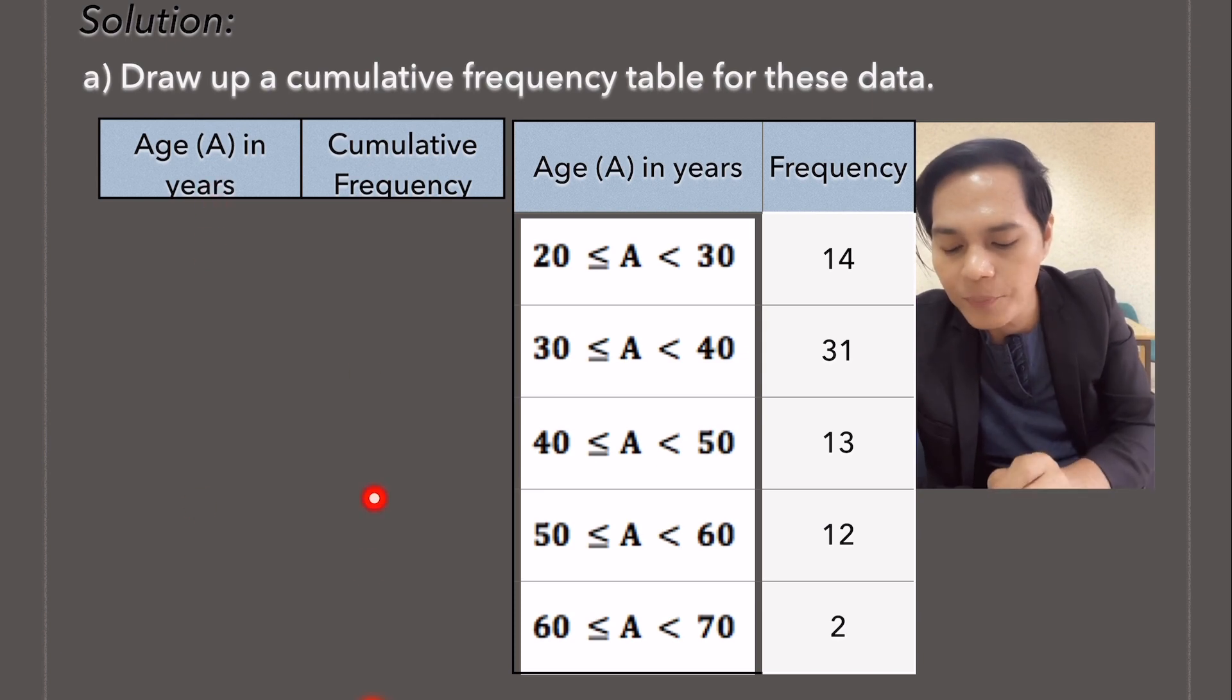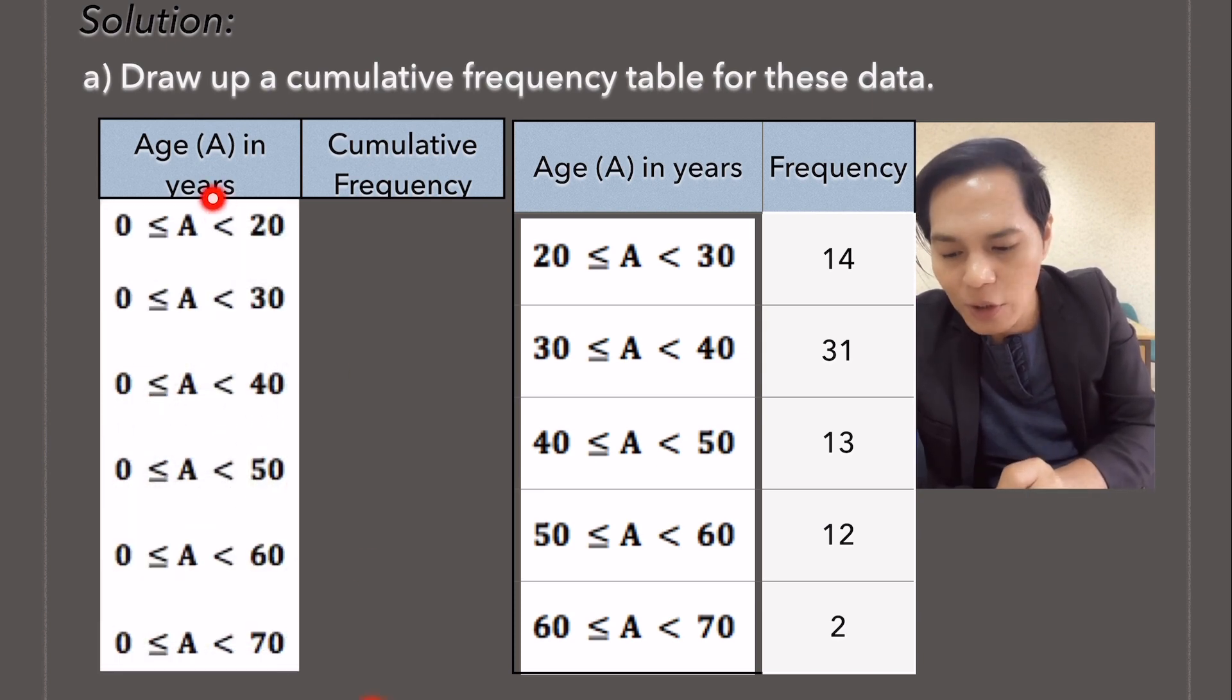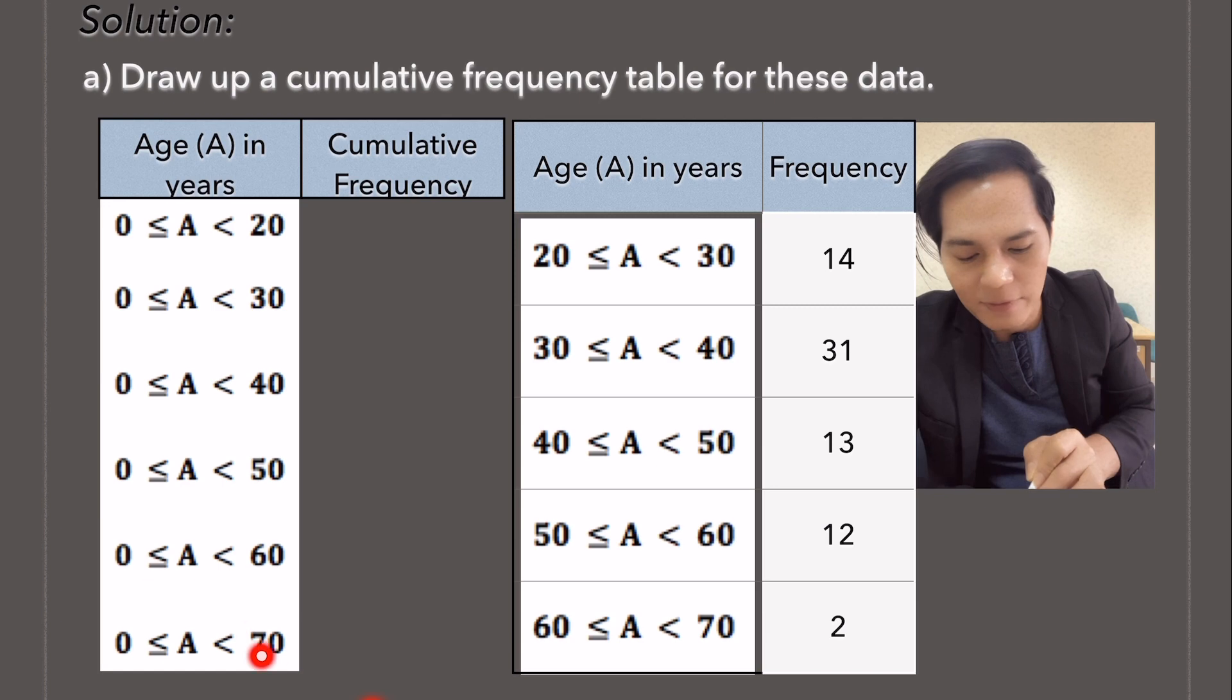And look at this now, age in years. Look at how I presented it, 0 to 20, okay? So then 0 to 30 and so on and so forth with 70 as the highest number here in age in years.